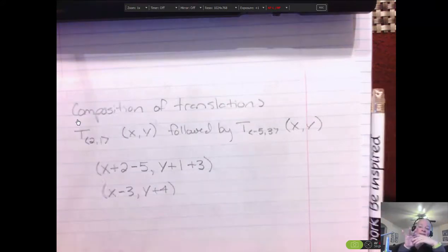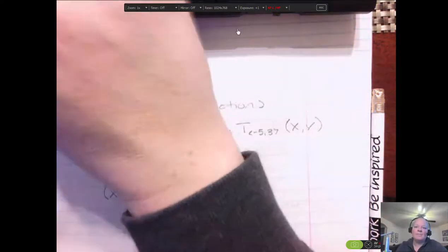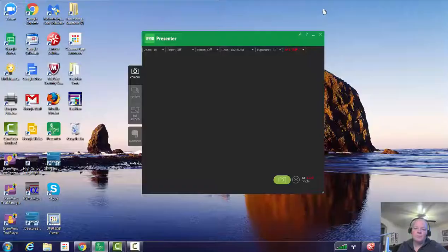You're going to be given points and you're going to be asked to do a translation. Where does it go? Add the numbers, subtract the numbers. Or if it gives you a translation, what did you do? Those kind of questions. So hopefully, if you need any more help, let me know. Good luck!